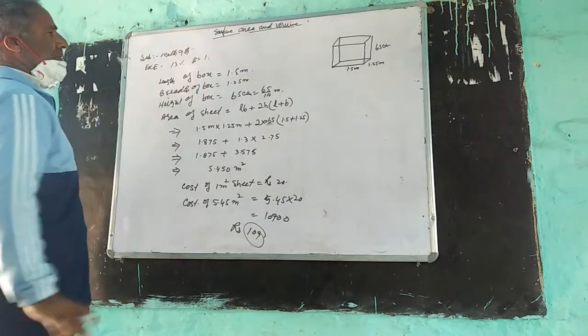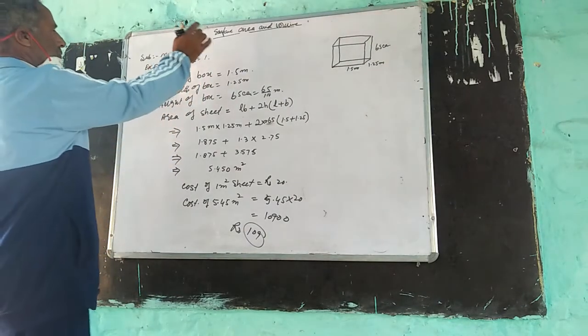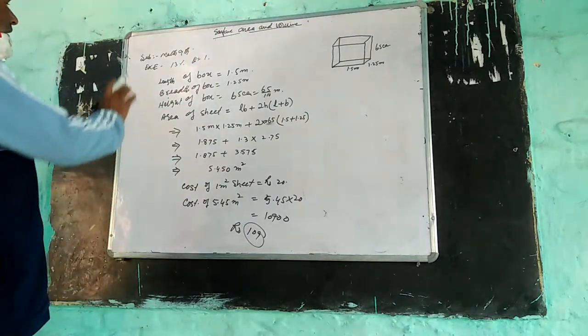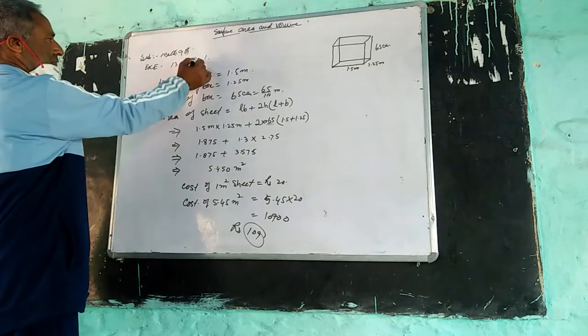Today we're working on examples, a couple of 30 per day on volume. The exercise is 30.1, question number first.